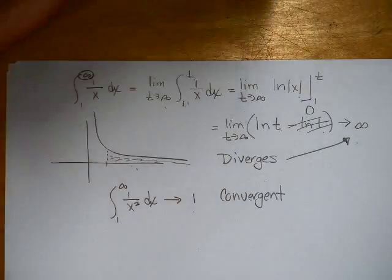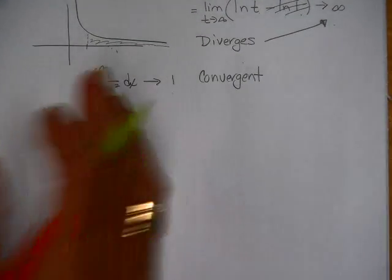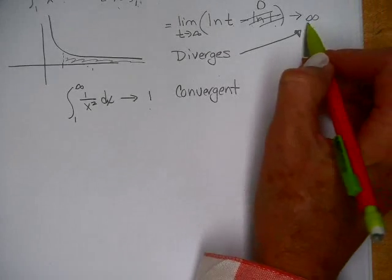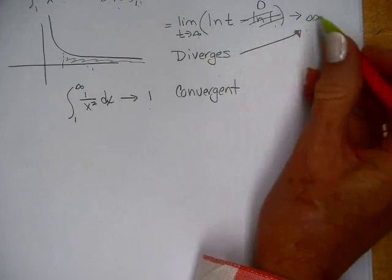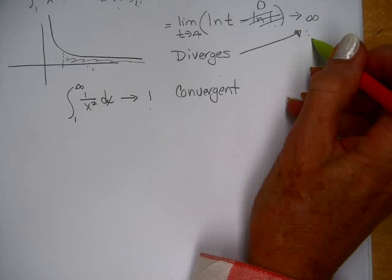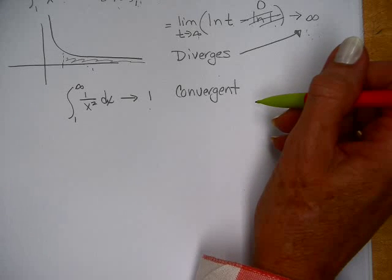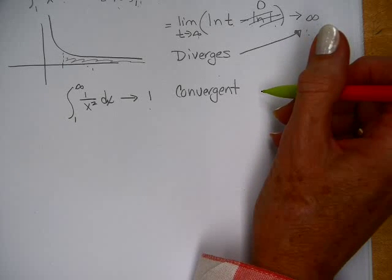Let me work some examples of this type. There's no quick way to tell if it diverges — you have to work it out. The only quick thing you can tell is whether it's improper. If you get that the limit does not exist, or goes to infinity, or to negative infinity, then it's divergent. If you get a numerical value — one, fifteen, whatever — then it converges.